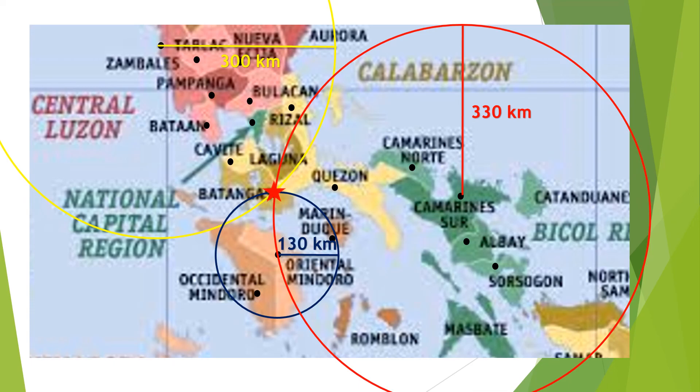You will notice that the three circles will meet at one point — the intersection point. The intersection point of the three circles is the earthquake's epicenter.